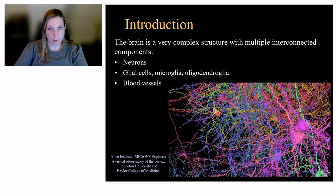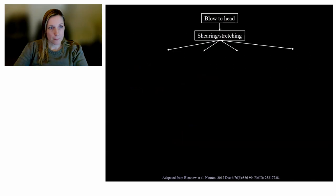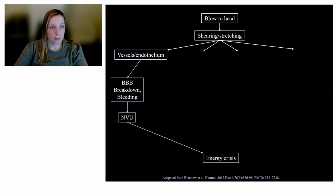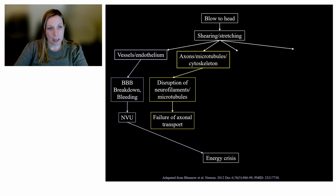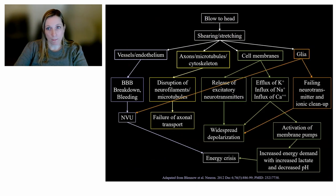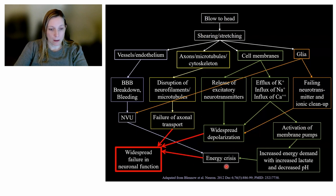The brain is a very complex structure with multiple interconnected components composed of neurons, other cell types that support the neurons, as well as blood vessels. When somebody experiences a traumatic injury or blow to the head, this causes shear force and stretching on these brain structures. There can be multiple sequelae involving the endothelium and blood vessels, axons, microtubules, cell membranes, and glial cells. All of these have complex downstream effects, ultimately resulting in a failure in neuronal function where the patient experiences cognitive symptoms.